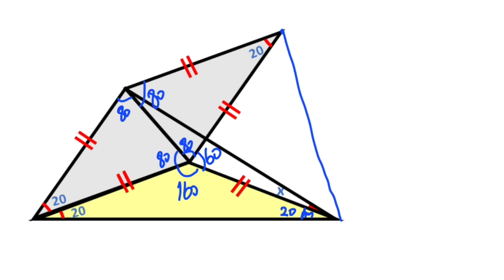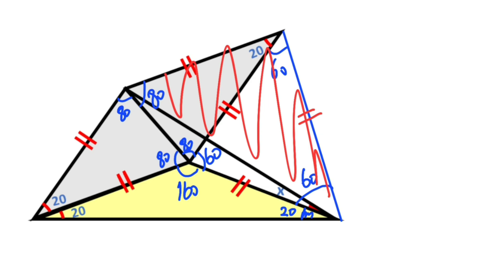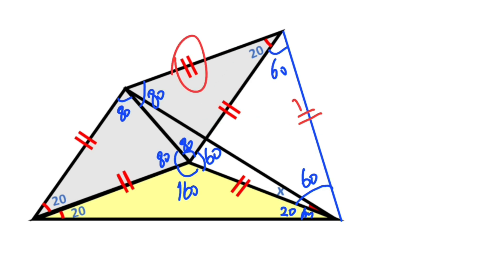If we connect these two corners, notice that we get an equilateral triangle. So this side length must be equal to the others. If you focus on this triangle, it is an isosceles triangle. Therefore the base angles must be equal at 50 degrees, so x is going to be 10 degrees.